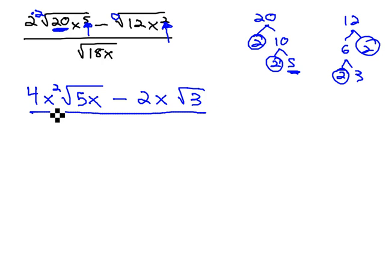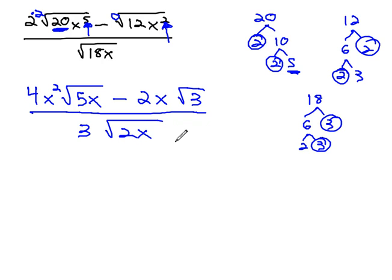All over, simplify the 18. 18 is 6 times 3, and 6 is 2 times 3. And so we see we have a pair of 3's outside the radical and a 2 inside the radical along with the x. No exponent, it's not going to simplify.